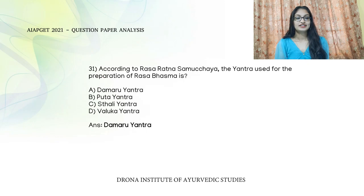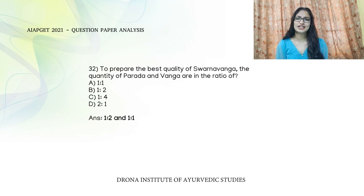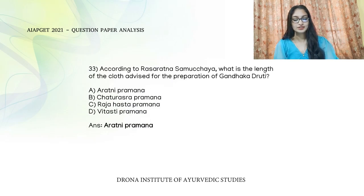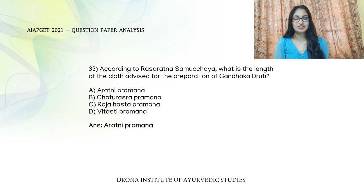Other Yantras: Stali Yantra is used for Dhatu Mridhu Karanam; Bhaluka Yantra is used for Koopi Pakwarasayanam and Gandhaka Jaranam. To prepare the best quality Svarna Vanga, the ratio of Parada to Vanga is 1:1 or 1:2 according to two different references. For Gandhaka Druthi preparation, Arachne Pramana cloth is advised.